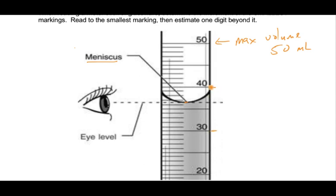For reading these different marks, you've got to interpret them correctly. The big lines go up in 5 milliliter increments, and the smaller lines go up in 1 milliliter increments. You can see 35, 36, 37, 38, 39, and then 40. Our meniscus is falling somewhere in between two of these lines.